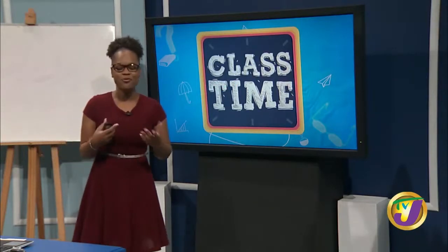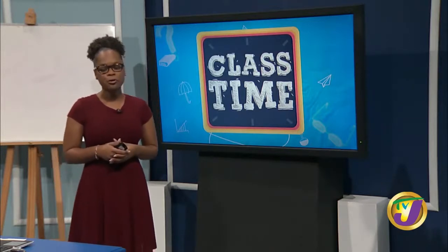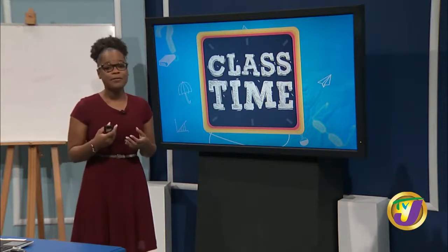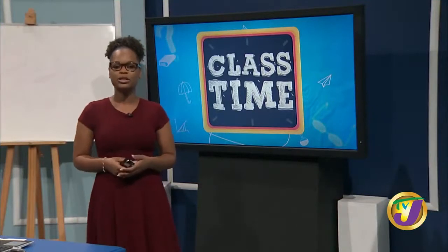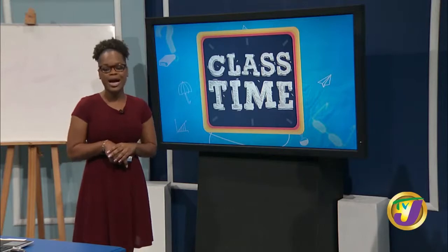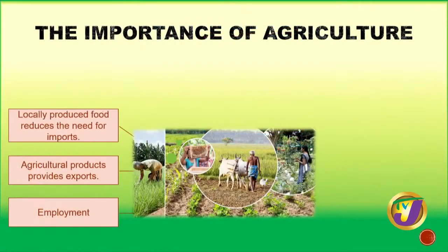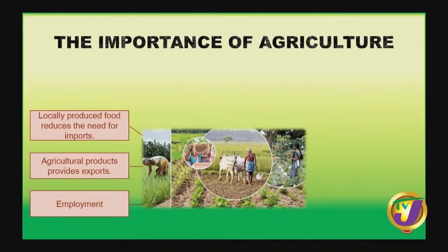Agriculture is important for many reasons, including employment. With subsistence farming, the farmer engages his family, so family members may not need to look elsewhere for work — both general and technical jobs are involved. Agricultural products are also means for export and local production reduces the need for imports, meaning we don't need to go to the international market for food. This makes food much cheaper for us as a nation and saves foreign exchange.